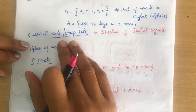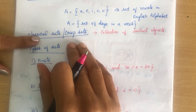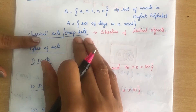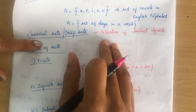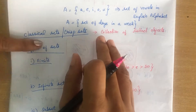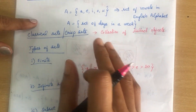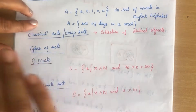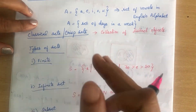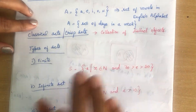What is a classical set or crisp set? A classical set or crisp set is also a collection of distinct objects. If the order of elements are changed in the set, it does not make any changes to the set. Changing the order of elements in a set does not make any difference.